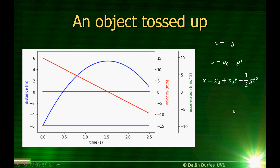So we have the equations. By using calculus, assuming that the acceleration is constant, we are able to find the velocity as a function of time and the position as a function of time. To find position as a function of time, I need to know the acceleration, the initial velocity, and the initial position. To find the velocity as a function of time, I just need to know the acceleration and the initial velocity.